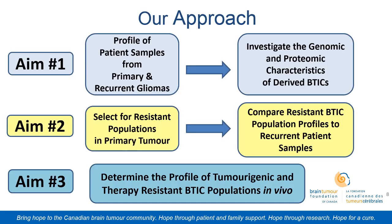This brings us to our approach, which consists of three aims. The first aim is comparing the primary and the recurrent glioma and subjecting that to various analytical tests. Our second aim is selecting for resistant populations in the primary glioma and comparing those back to the recurrent glioma. Our last aim is to determine the tumorigenic and therapy-resistant populations using mouse models.